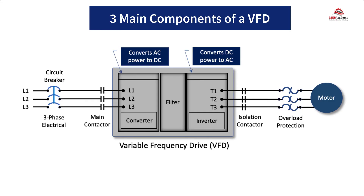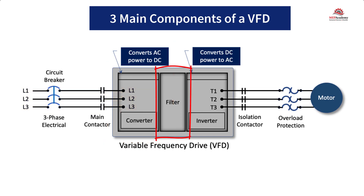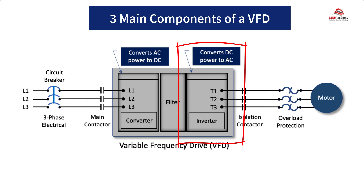The three main components of a VFD convert AC voltage to DC voltage and then back again using a simulated AC voltage. First, you have the converter or rectifier, which takes the incoming three-phase alternating current AC power and converts it into direct current DC power. Then the filter smooths it out and rectifies the DC voltage. Finally, the inverter rapidly switches the direct current DC voltage on and off to create a pulsating voltage that mimics AC voltage. By controlling the rate of switching, the frequency can simulate AC power applied to the motor to control its speed — essentially switching from DC back to AC.